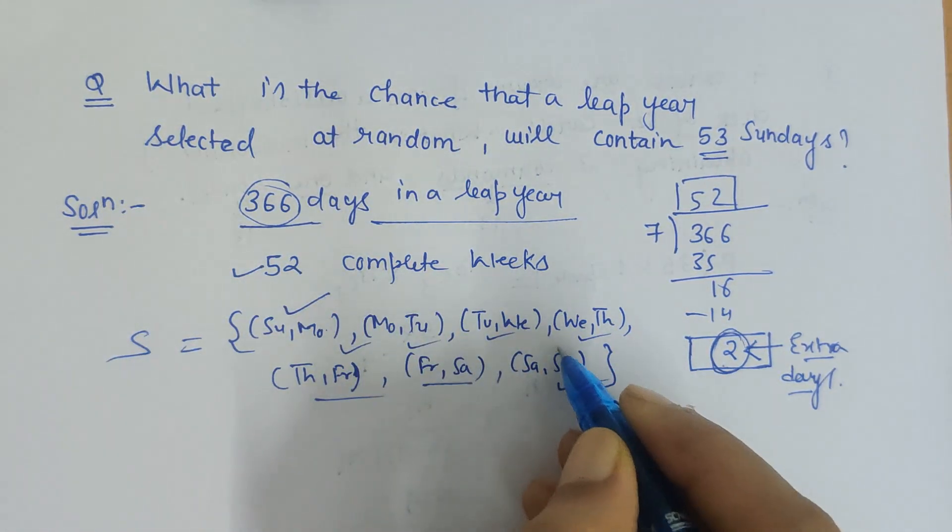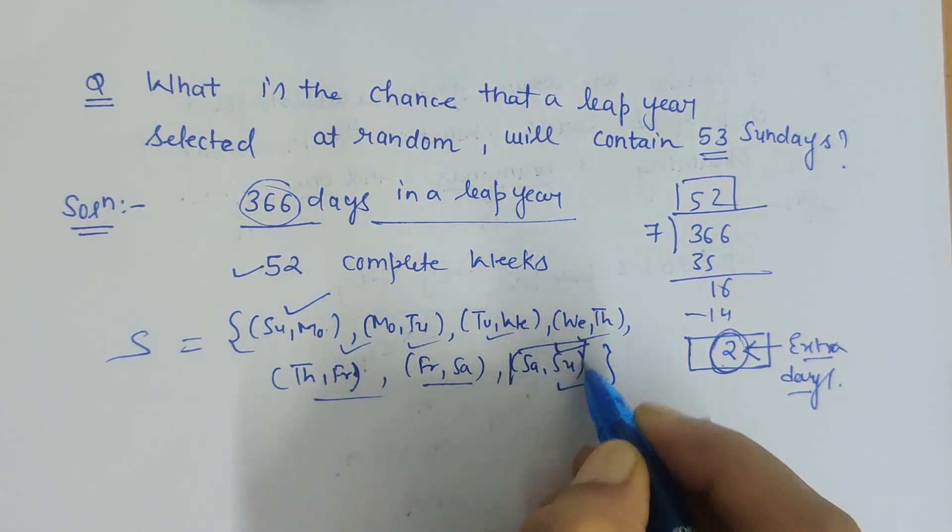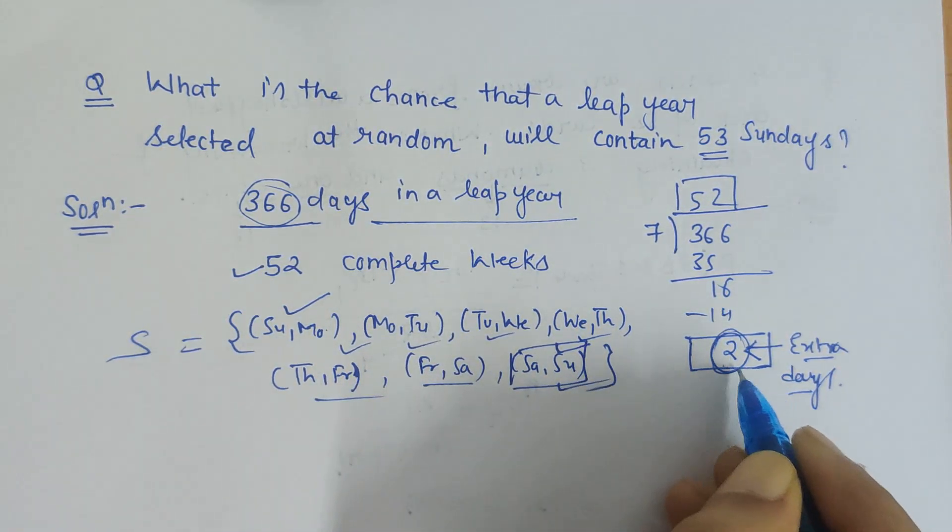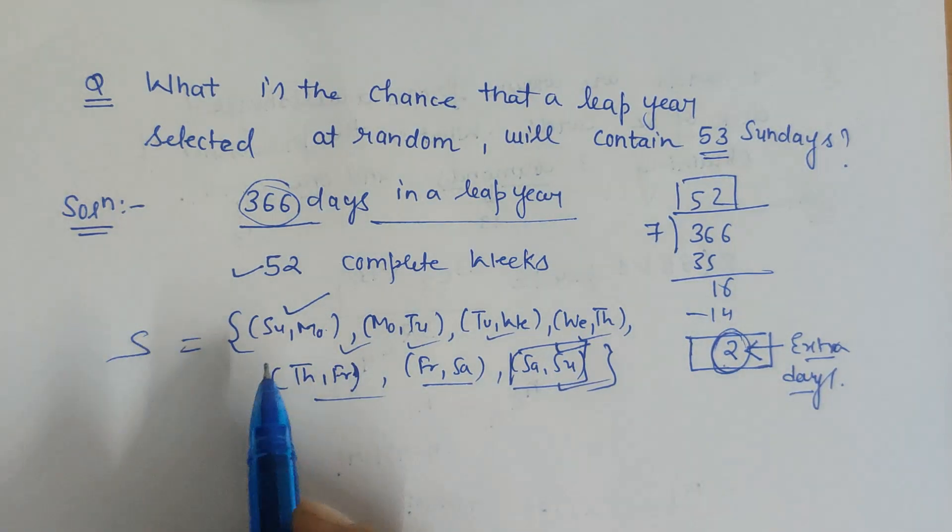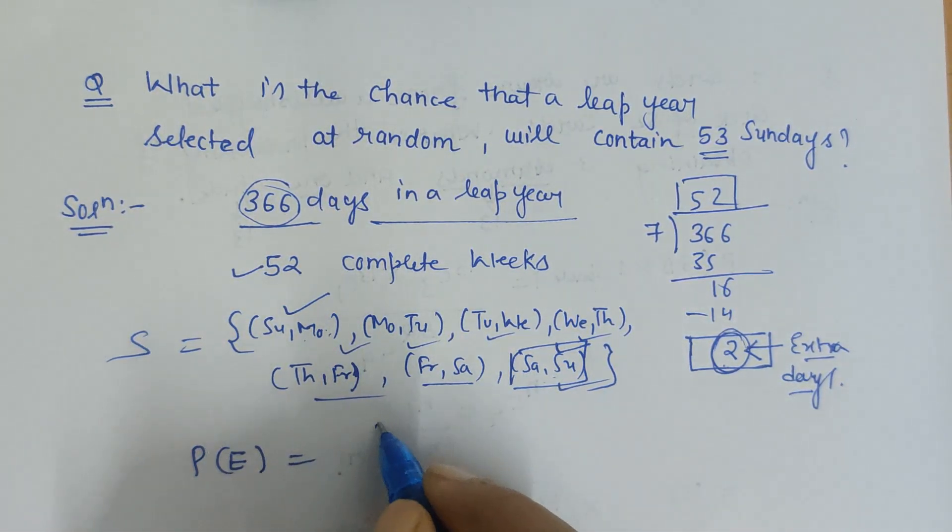Either it would be Saturday-Sunday as the extra two days, or Sunday-Monday as the extra two days, because only in these two cases we are getting Sunday. So the favorable outcome is 2 out of the total 7 possible outcomes.